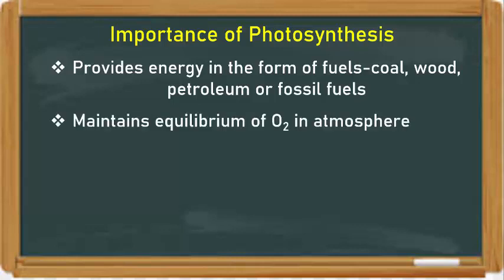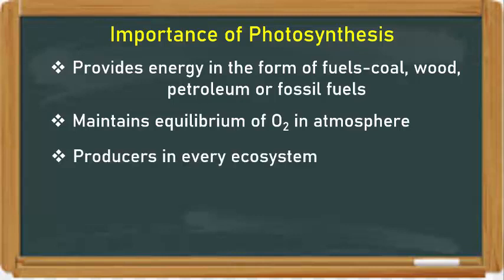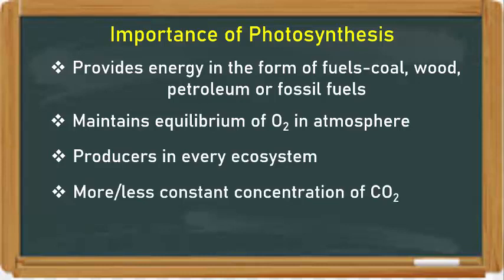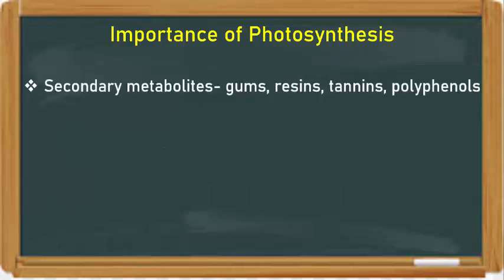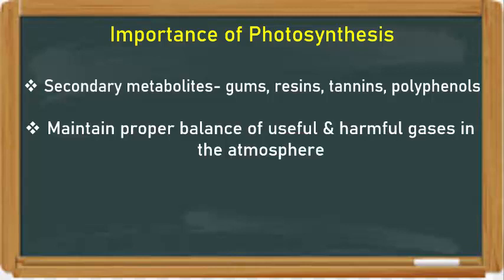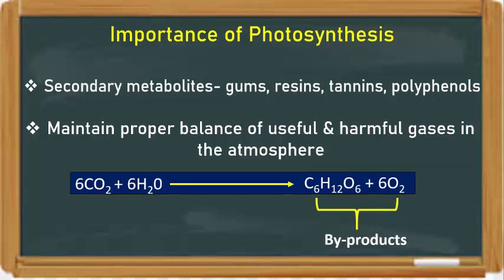Photosynthesis also maintains the equilibrium of oxygen in the atmosphere. Photosynthetic organisms are the producers in every ecosystem, and photosynthesis is responsible for maintaining a more or less constant concentration of atmospheric carbon dioxide. Photosynthesis is an energy transduction process because light energy is converted into chemical energy by green plants. Photosynthesis is also useful in the production of many secondary metabolites like gums, resins, tannins, and polyphenols. It is also responsible for maintaining proper balance of useful and harmful gases in the atmosphere, and oxygen — a by-product of photosynthesis — is essential for life.